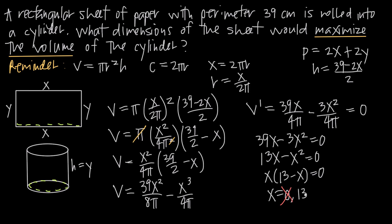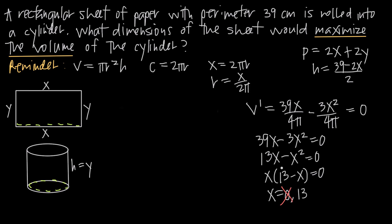A critical point is where the function changes direction — from decreasing to increasing or increasing to decreasing. Because we've found this one critical point, x = 13 is probably the value that maximizes the volume, but we need to prove it. We'll use the first derivative test, which uses V' to confirm whether this is a maximum.